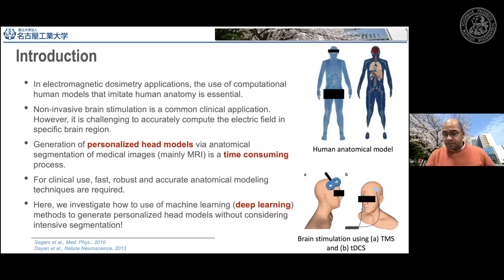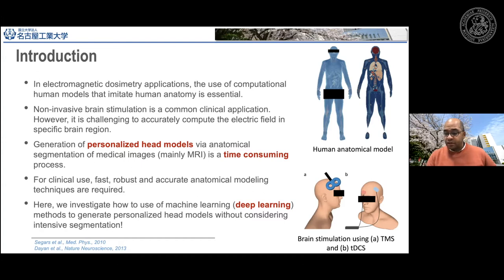There are two famous applications for brain stimulation. The first is TMS (transcranial magnetic stimulation), where the stimulation device looks like a figure-eight coil and is located above the skull. The other is TDCS (transcranial direct current stimulation), where two electrodes are attached to the patient and a weak electrical current passes through the electrodes to do the stimulation.